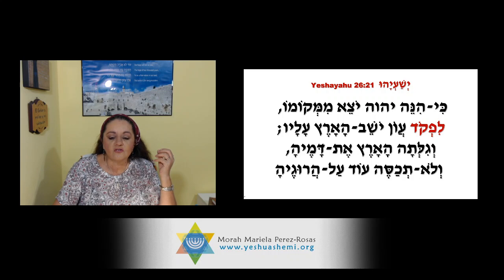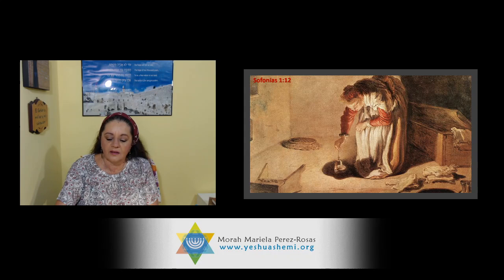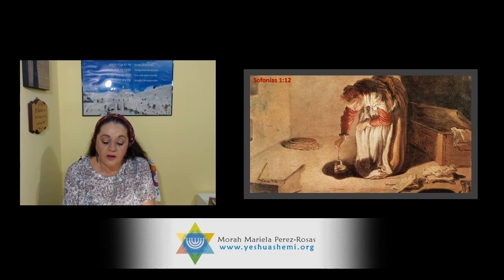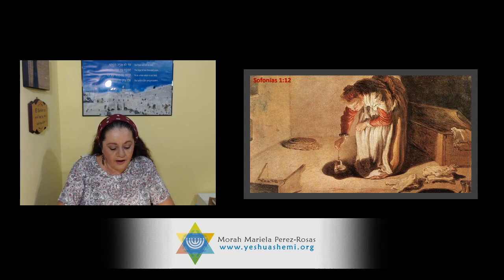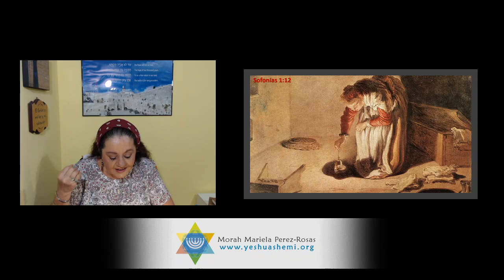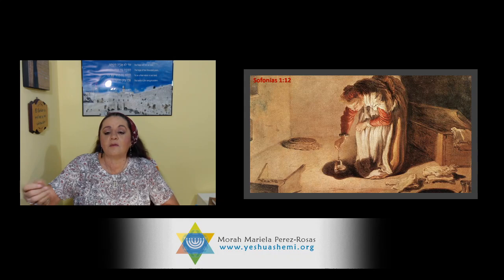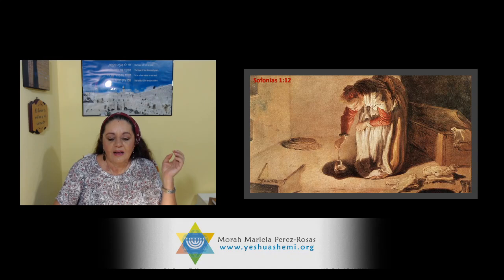Esto es importantísimo que nosotros entendamos, porque hay un día especial que el Eterno escogió para esto. Vamos a Sofonías 1:12. Sabemos que el juicio empieza por la casa del Eterno. Miren lo que nos dice Sofonías: 'En aquel tiempo escudriñará a Jerusalén con linternas y castigará a los asentados sobre las heces de su vino, a los que dicen en su corazón: Hashem no hará bien ni mal.' Pero acá no es escudriñar, sino este verbo pacar — visitaré, contaré, pasaré cuenta, pediré cuenta, voy a comenzar a visitar. Eso es lo que está en esta palabra.